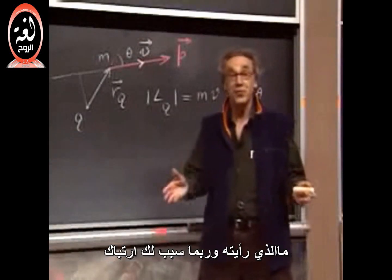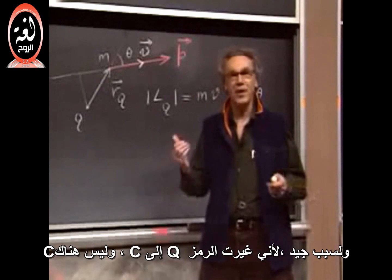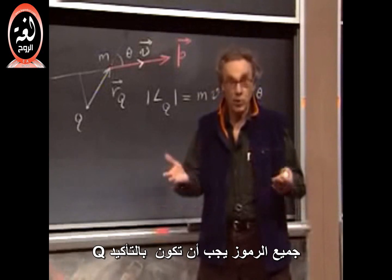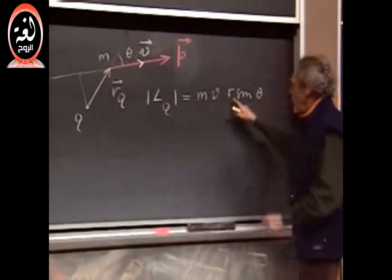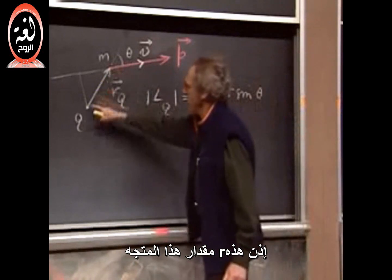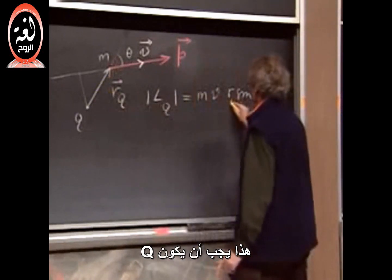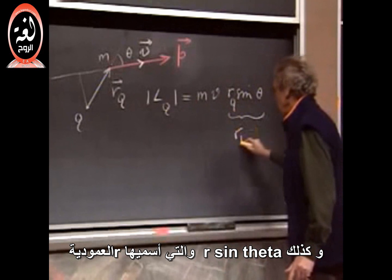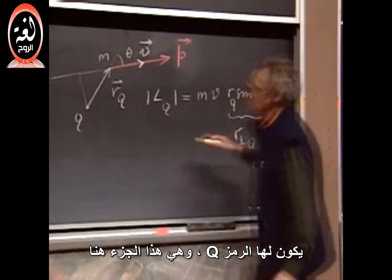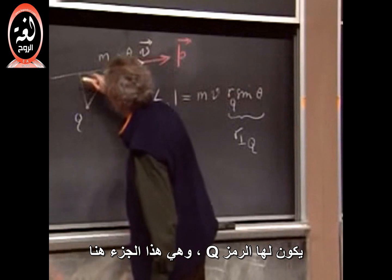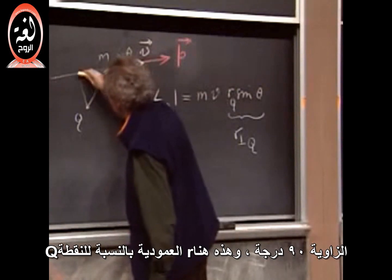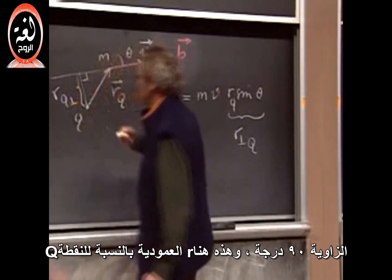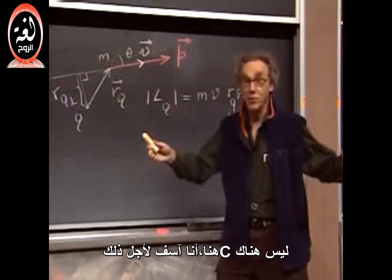What you just saw may have confused you, and for good reason, because I changed my index Q to C, and there is no C. The indexes should all be Q, of course. So, this R is the length of this vector, the magnitude of this vector. So, this should have a Q. R of Q sine theta, which I call R perpendicular, must have an index Q, and that is this part here. This angle is 90 degrees, and this here is R of Q perpendicular. No C's at all, only Q's. I'm sorry for that.